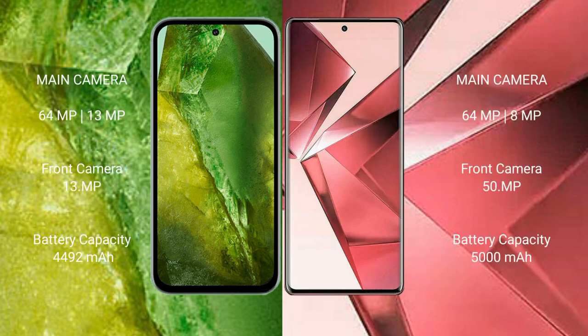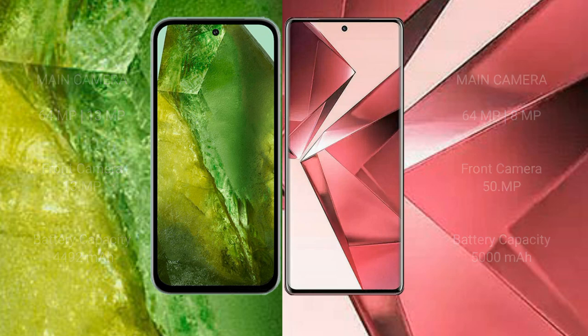Google Pixel 8a features a rear dual camera setup of 64MP plus 13MP, and a 13MP front camera, with a 4422mAh battery and 30W fast charging support. vivo Y29e features a rear dual camera setup of 64MP plus 8MP, with a 5000mAh battery and 30W fast charging support.